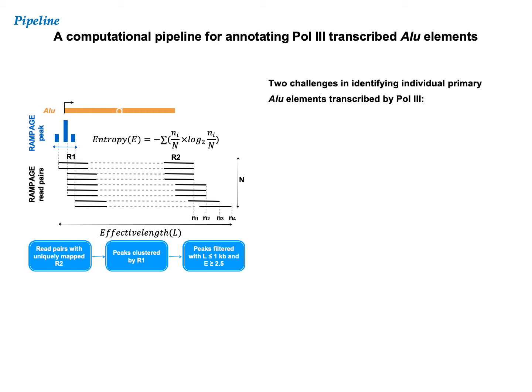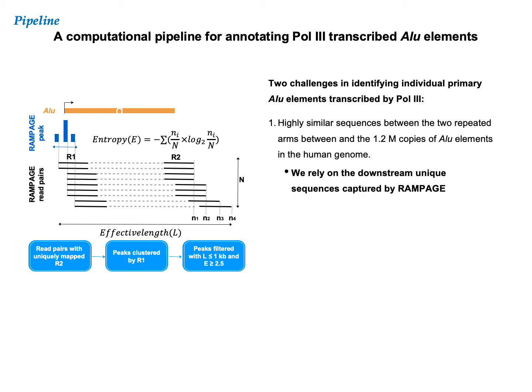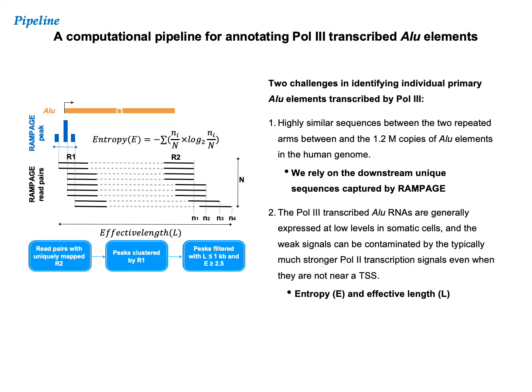We were faced with two main challenges. Number one, Alu sequences are highly repetitive. Luckily, Pol III typically transcribes well into the downstream region. Thus, RAMPAGE allows us to take advantage of these non-repetitive downstream sequences to uniquely assign reads to individual Alu elements.